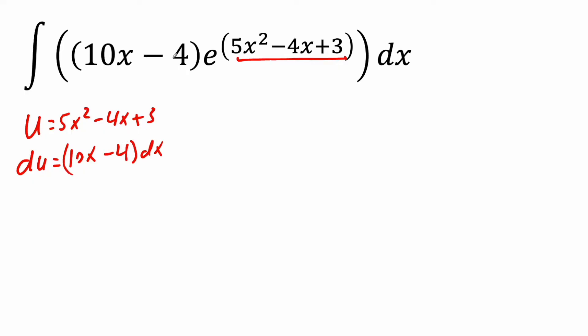And so we see 10x minus 4 dx, this piece right here, will get cancelled and turn into du. So let's do this.